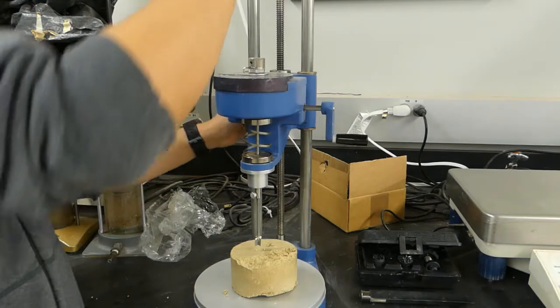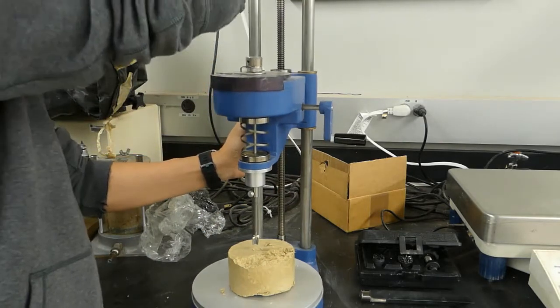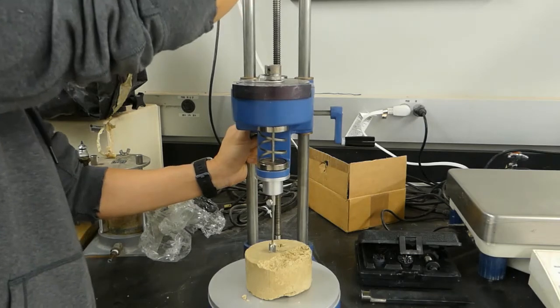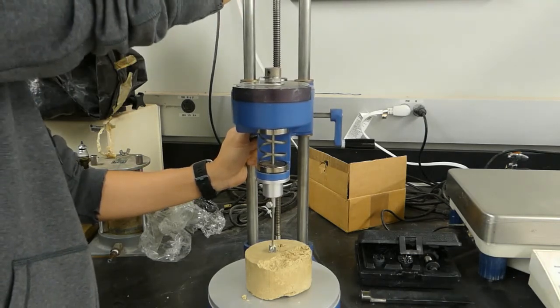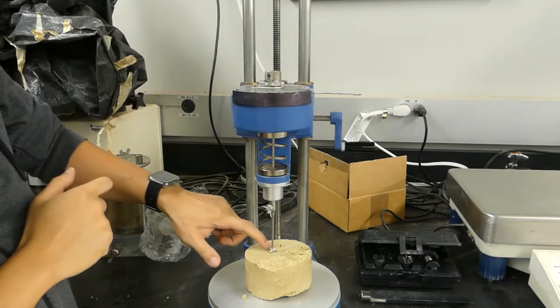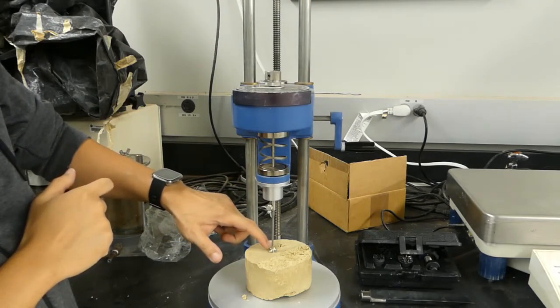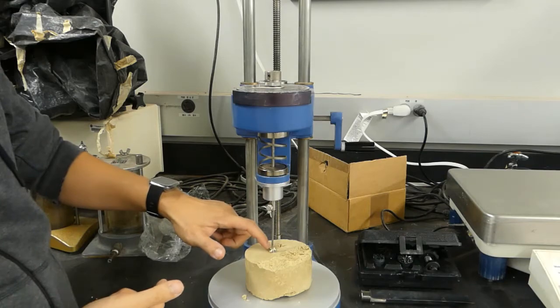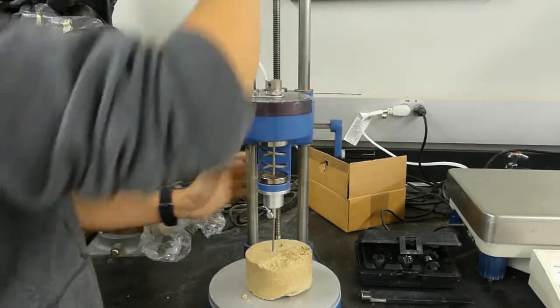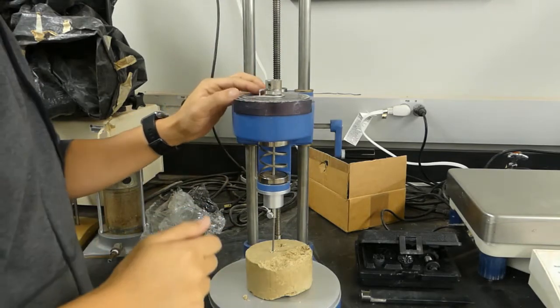And so when we do the test, so first thing, we will lower the vane into the soils. So we will lower the vane, until to a point that the upper top here, the vane is at least half inch into our soils. So we'll push this in, now the vane is in.